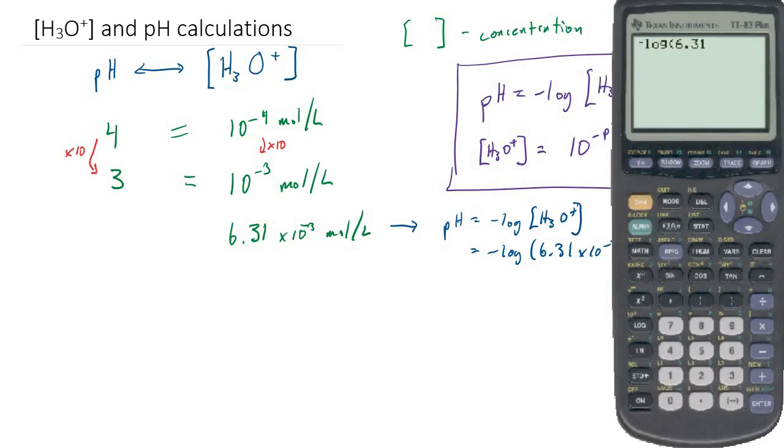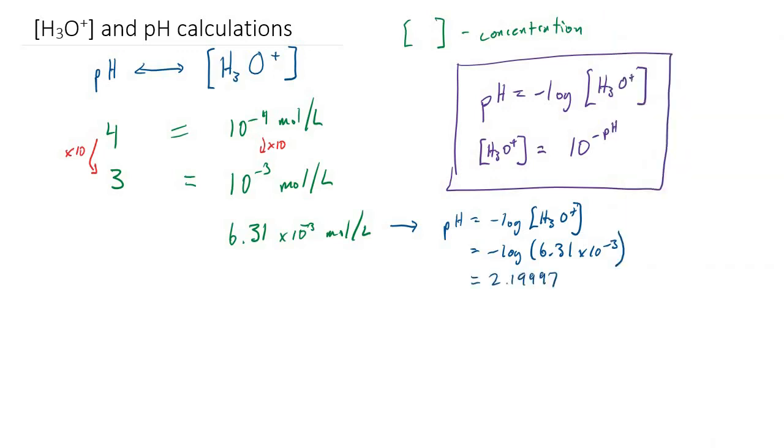So if you do second comma, the button just above the 7, that gives you the capital E. That just means times 10 to the power of, and I have 10 to the power of negative 3. So this should be 2.199 and with a few more digits 2.19997 and we have to have a special note about significant digits here.